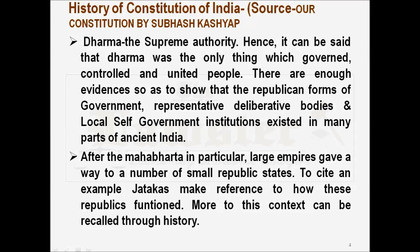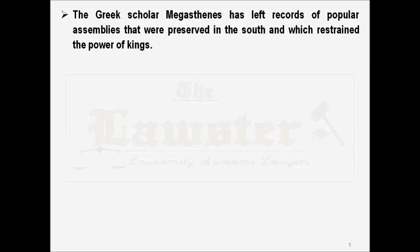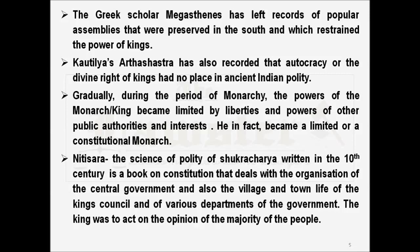More of this context can be recalled through history — you can read books or watch videos for more on these institutions. The Greek scholar Megasthenes left records of popular assemblies that were preserved in the south and which restrained the power of the kings. The king had actually become a constitutional monarch or a limited monarch, and he could not do anything on his own wish and will — whatever he had to do, he had to take recourse to the opinion of the people. Kautilya's Arthashastra has also recorded that autocracy or the divine right of kings had no place in ancient Indian polity.